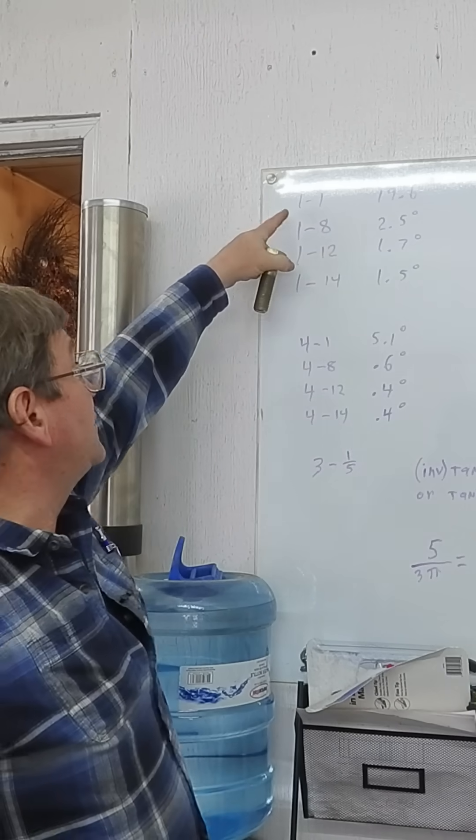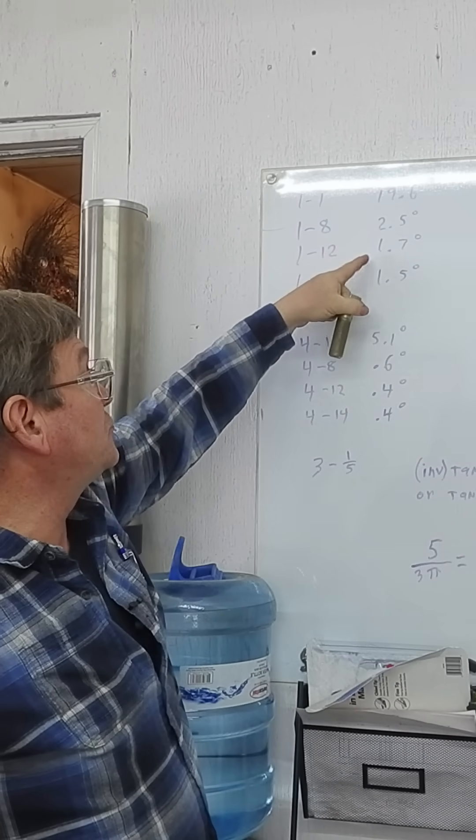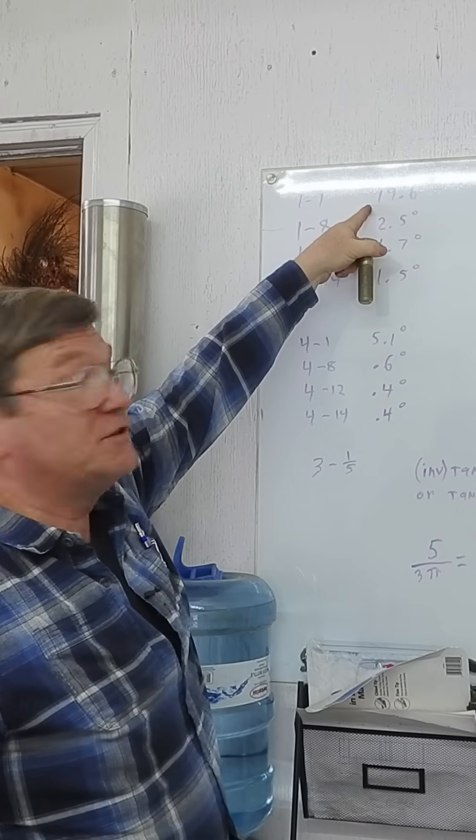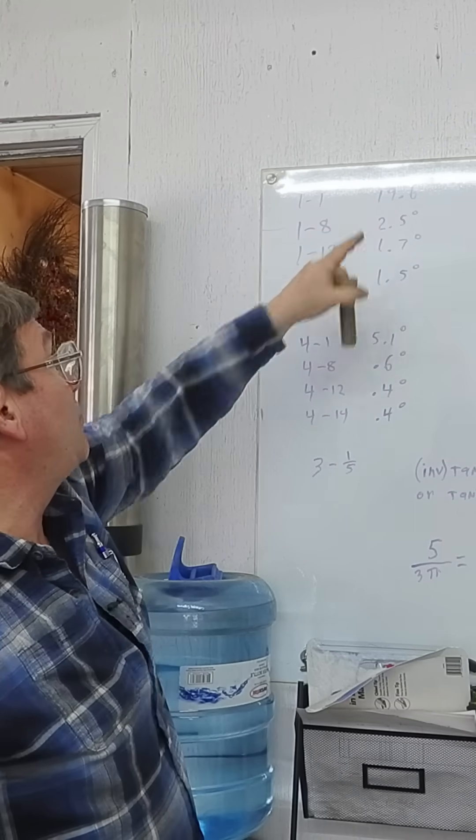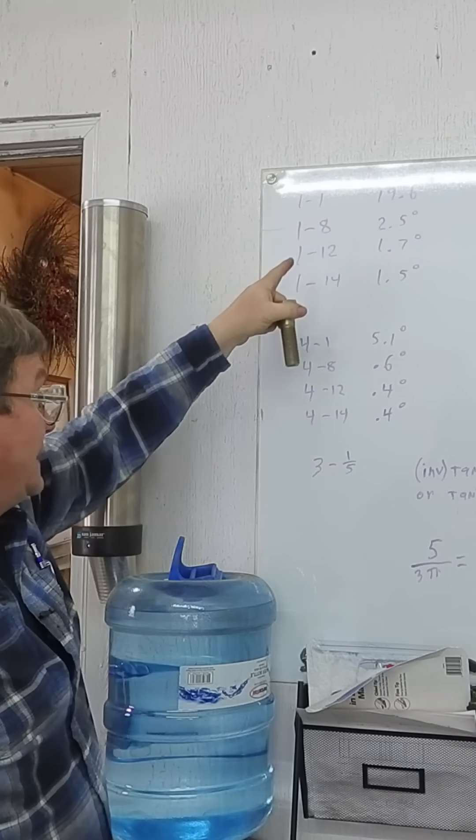And you can see from the chart here, here are normal thread sizes and the degrees rounded off that you'd have. You're almost at 20 degrees for a one inch, one lead thread.